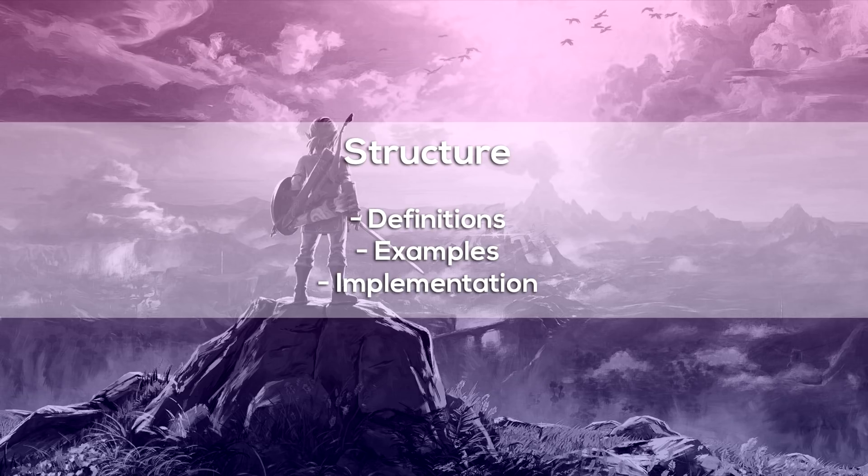Good day everyone, Complaining Gamer here. I'm borderline technologically challenged, however my short-term memory allows me to retain information just long enough to explain it before it's forgotten forever. Today I'm going to explain anisotropic filtering versus LOD bias and the effect it has on your gaming experience. If your first reaction is 'what?' — perfect. The structure will be simple: definitions, then examples, then implementation, covering only the basics.